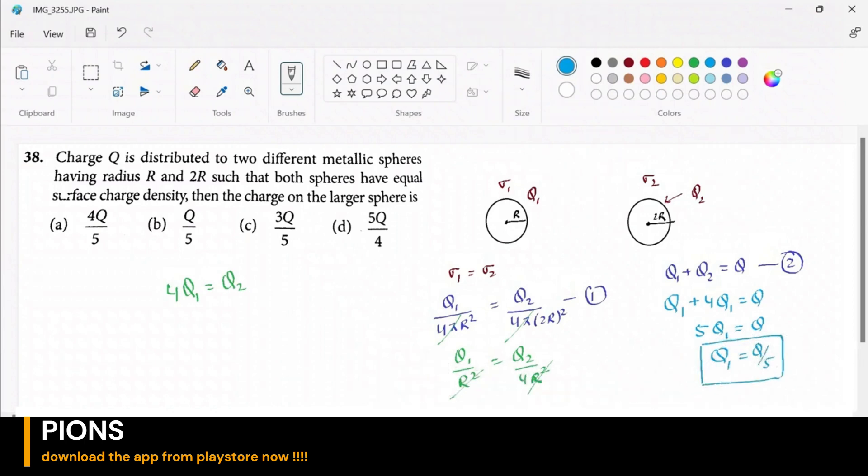Then what can we say about the charge on the second sphere? The charge on the second sphere will be q2 will be 4 times q1, so 4 times Q by 5. So is there any option 4 by 5 of Q? Yes, option A.